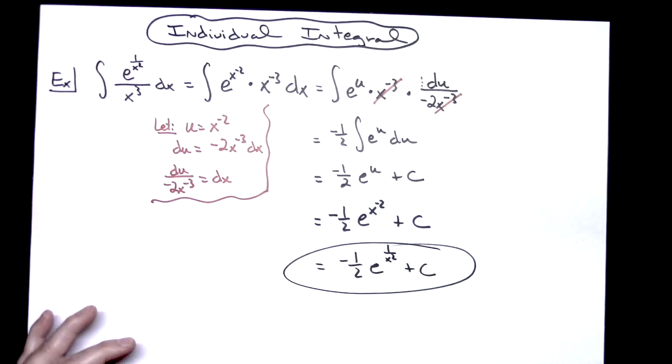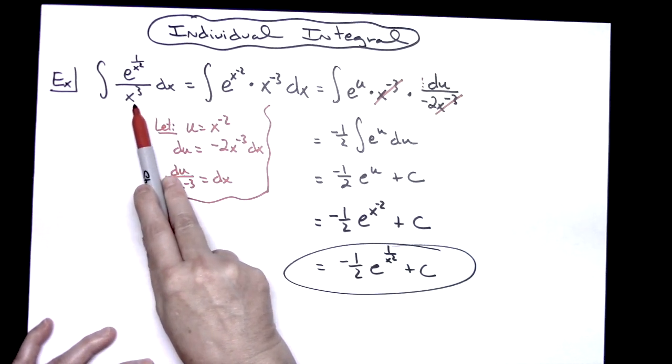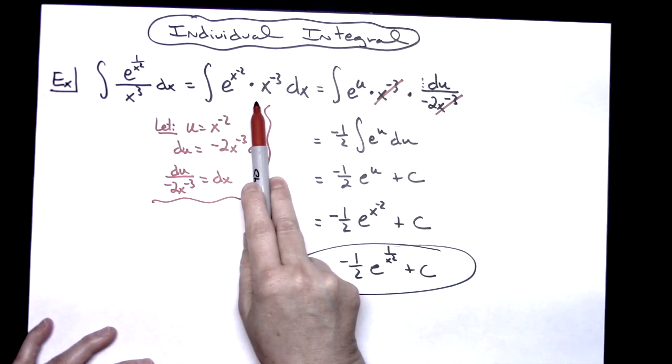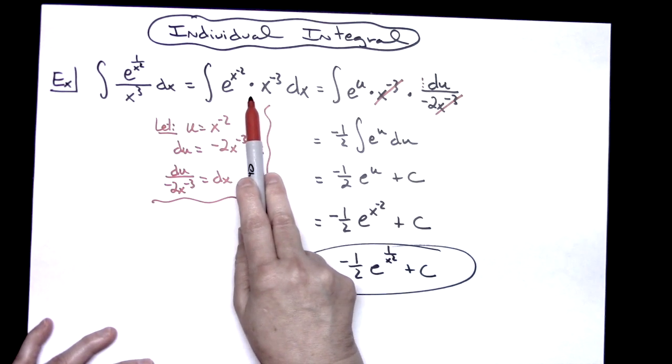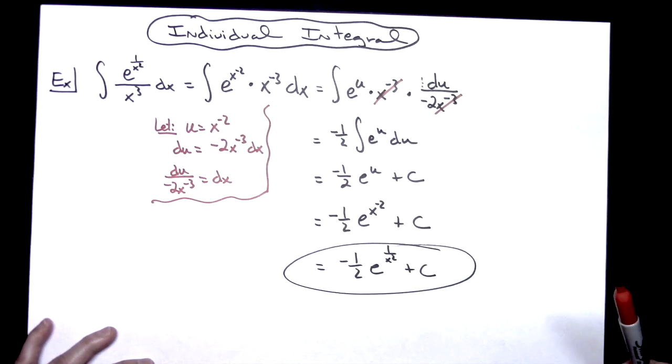But for the most part, a straightforward u-substitution problem, one typically found in a calc 1 class. The only thing I did here was I took this before I started and I did a little bit of laws of exponents, algebraically manipulated that function to make it easier to pick my u and make everything fall out.